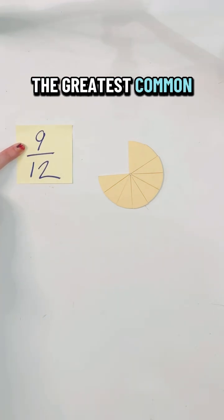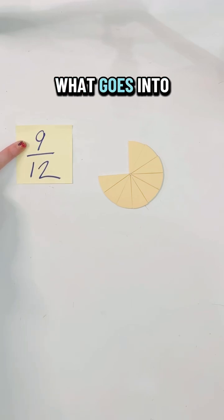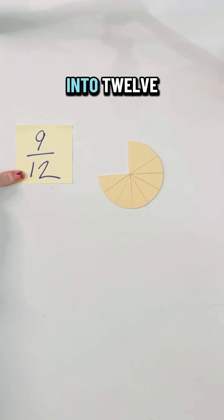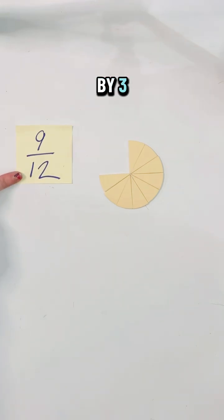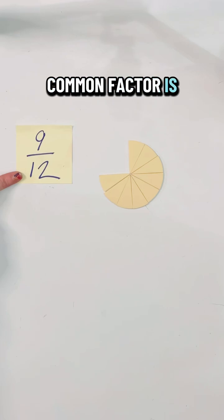We need to find the greatest common factor. In other words, what goes into nine that also goes into 12? Nine and 12 are both divisible by three, so my greatest common factor is three.